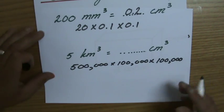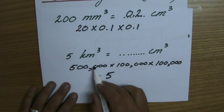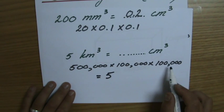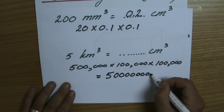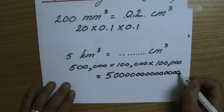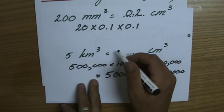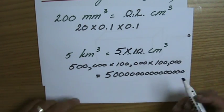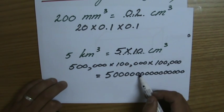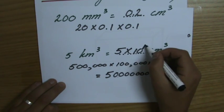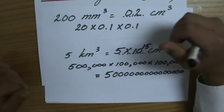That gives 5 × 1 = 5, and then I count the zeros: fifteen zeros in total. Nobody really understands a number that large written out, so I'll write it in standard form: five times ten to the power of fifteen. So 5 km³ equals 5 × 10¹⁵ centimetre cubes — an absolutely huge volume.